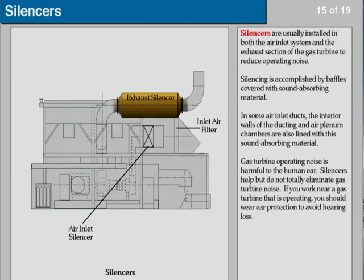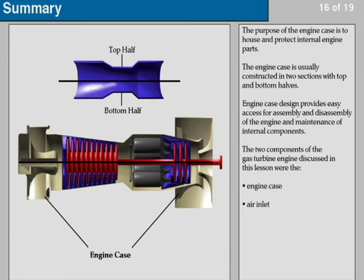Silencers are usually installed in both the air inlet system and the exhaust section of the gas turbine to reduce operating noise. Silencing is accomplished by baffles covered with sound-absorbing material. In some air inlet ducts, the interior walls of the ducting and air plenum chambers are also lined with this sound-absorbing material. Gas turbine operating noise is harmful to the human ear. Silencers help but do not totally eliminate gas turbine noise. If you work near a gas turbine that is operating, you should wear ear protection to avoid hearing loss.